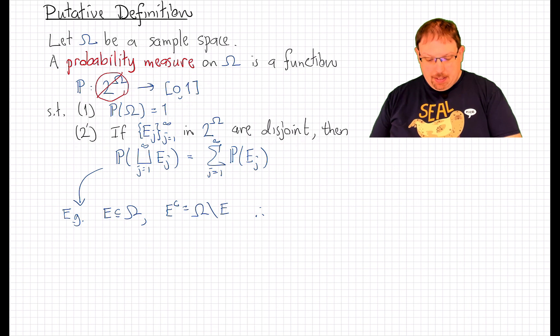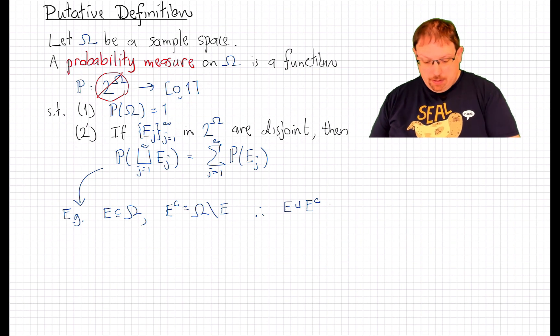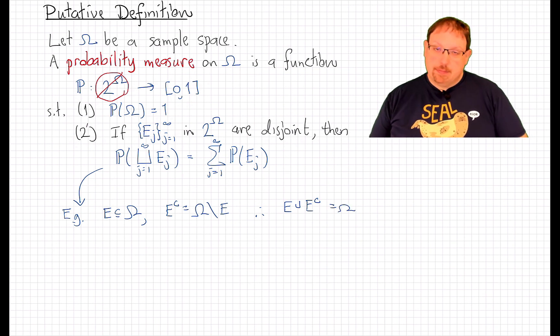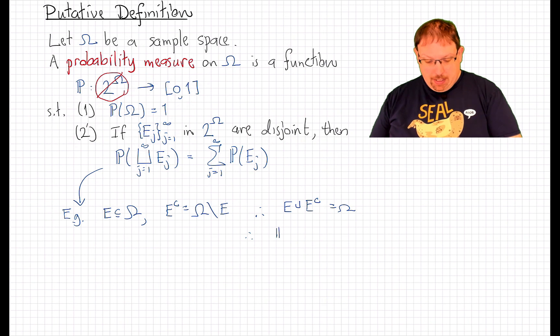well, that's the set of all things that are not in E. And that means that if I take E and E complement, their union, which is a disjoint union, is all of omega. From that, we can see that the probability of this disjoint union is the probability of omega,